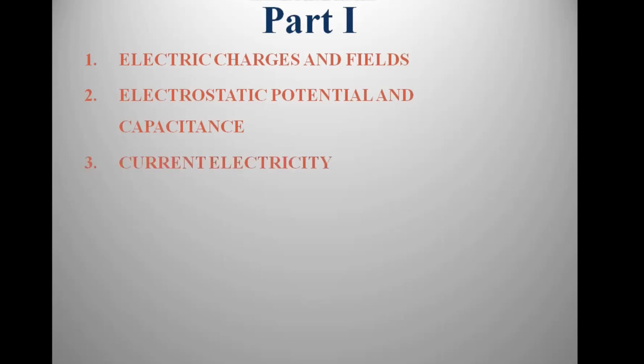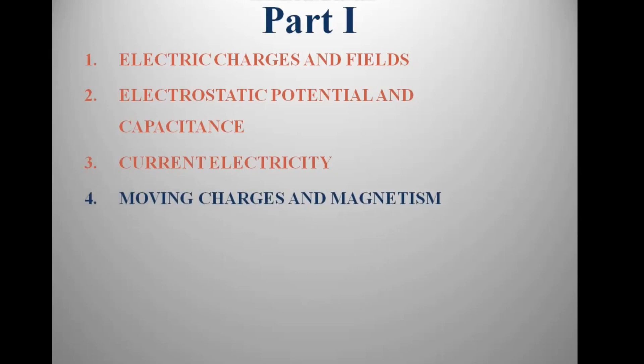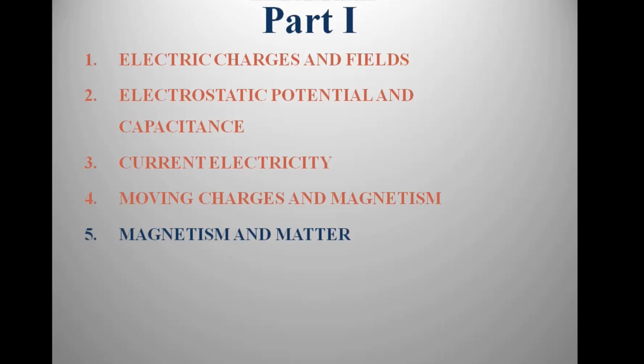A current-carrying conductor produces a magnetic field — hence Christian Oersted, the scientist. Chapter 4 is Moving Charges and Magnetism. In this chapter, we learn about the magnetic field.